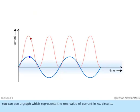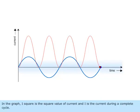You can see a graph which represents the RMS value of current in AC circuits. In the graph, I square is the square value of current and I is the current during a complete cycle.